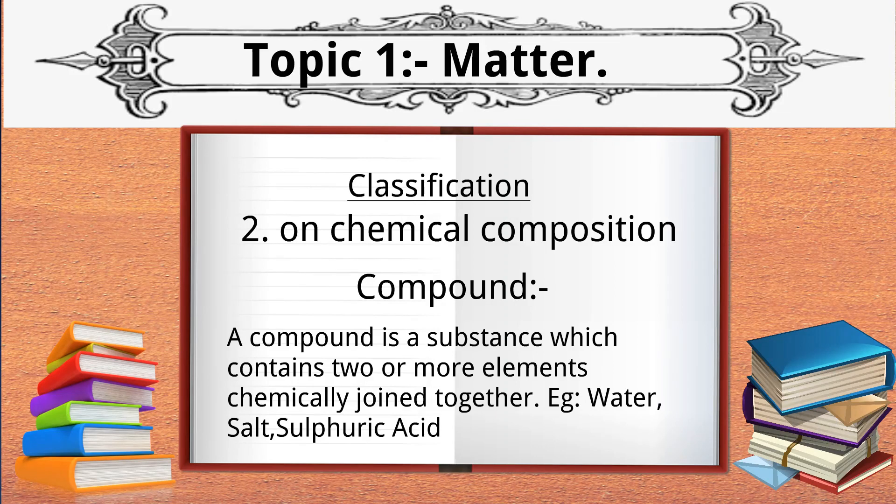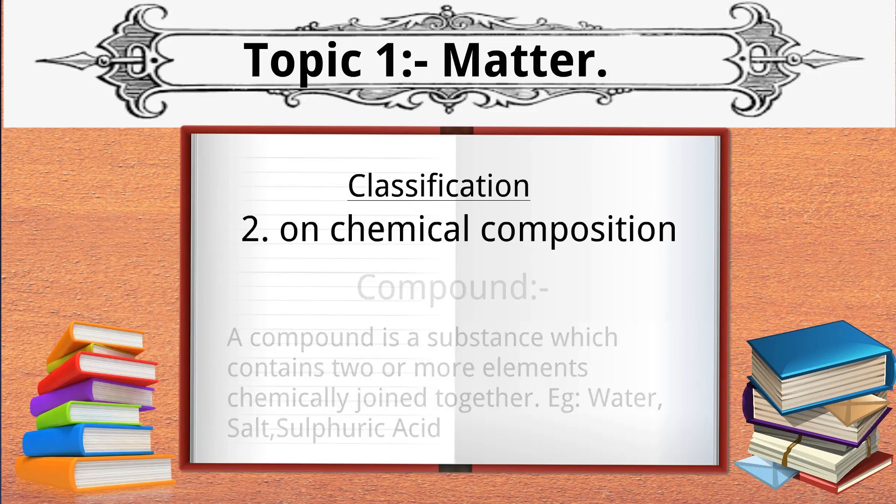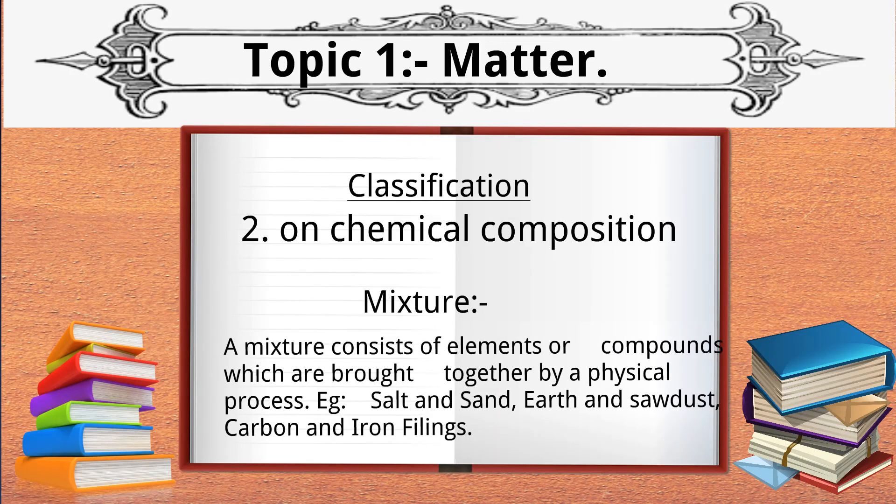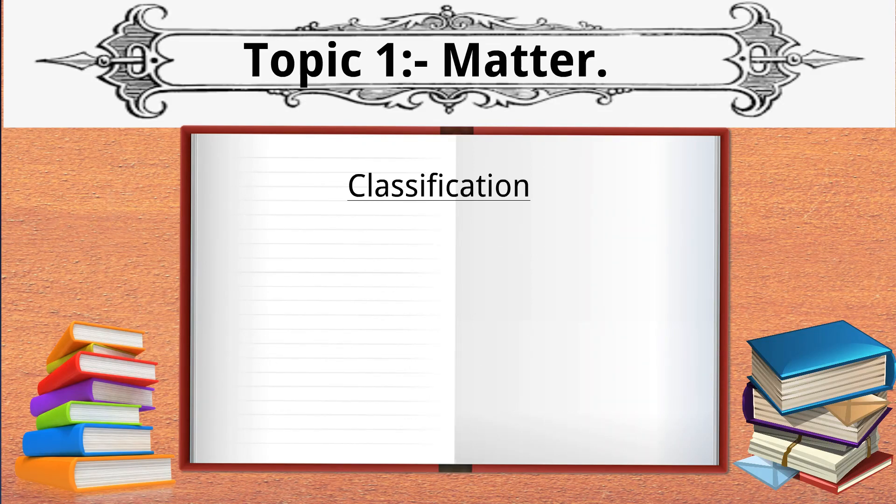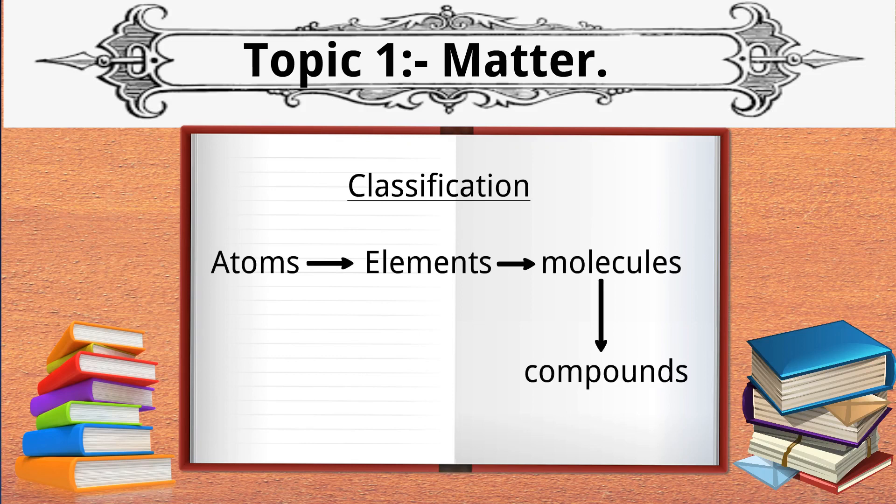A compound is a substance which contains two or more elements chemically joined together. Examples: water, salt, sulfuric acid. A mixture consists of elements or compounds which are brought together by a physical process. Examples: salt and sand, earth and sawdust, carbon and iron filings. Now for better understanding, let's see the flowchart. Atom is the smallest constituent particle of matter.